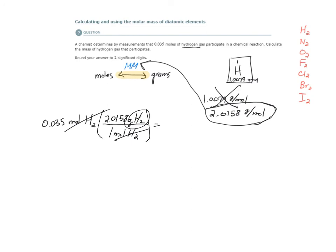So 2.0158 times 0.035 gives us 0.070553 grams of H2. We're limited to two significant digits. So this would be 0.071 grams of H2.